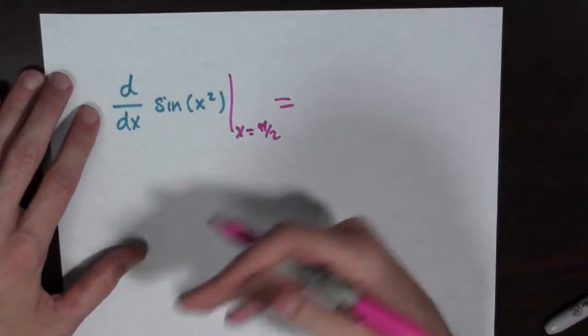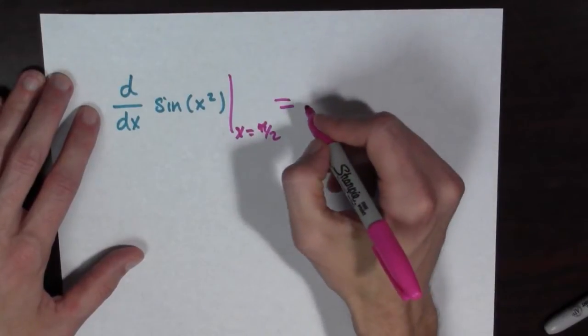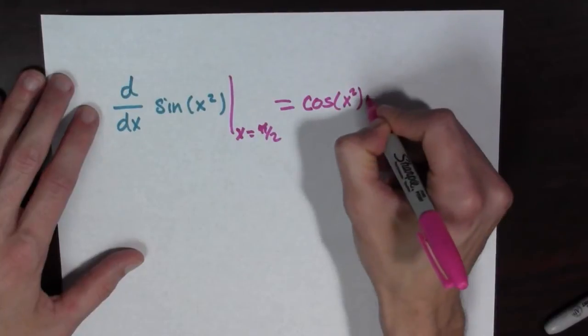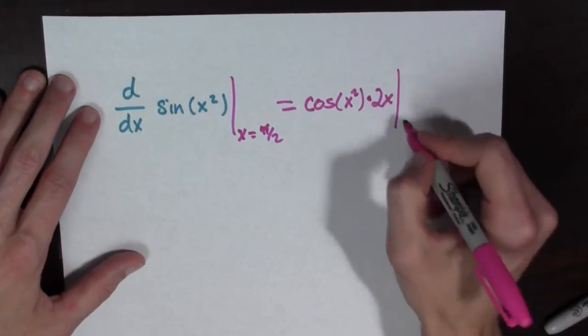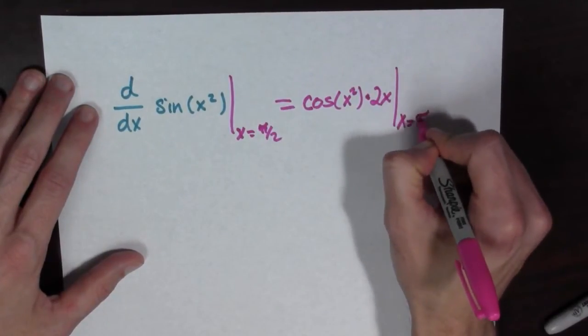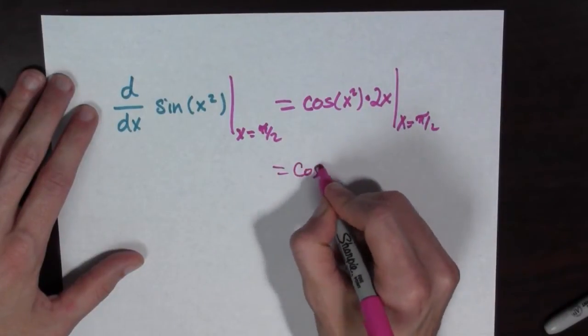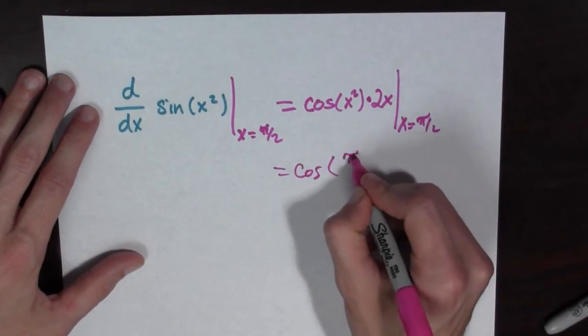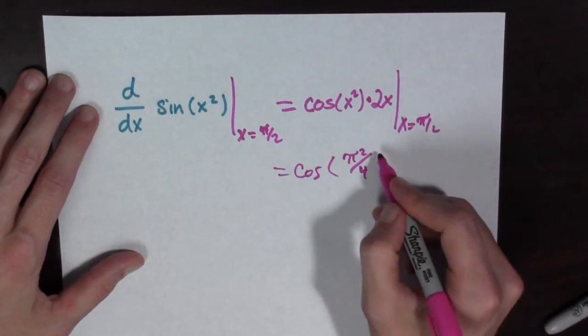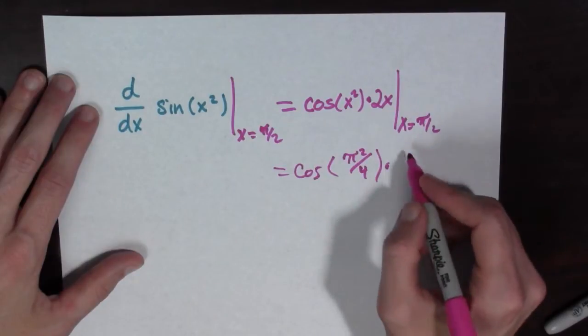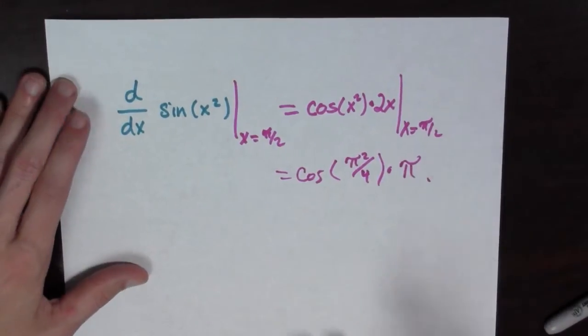well, it's equal to, check this out. Now, the derivative of sine x squared, derivative of sine is cosine, that's cosine of x squared times 2x evaluated at x equals pi over 2, which is equal to cosine of pi squared over 4 times 2x, which in x is pi over 2 times pi.